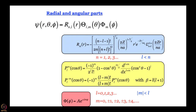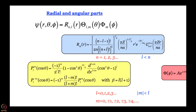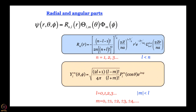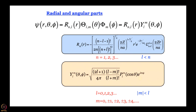The full wave function is R times Θ times Φ. You can also put the theta- and phi-dependent parts together and write this as spherical harmonics, because in spherical polar coordinates you have one radial coordinate r and two angles. So the wave function is written as the radial part multiplied by the spherical harmonics. In the next couple of modules we are going to try to plot them one by one and see what they look like.